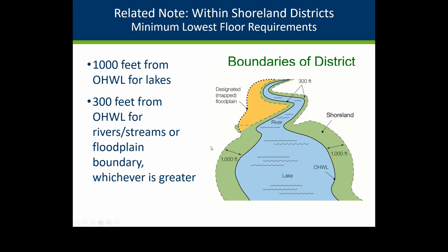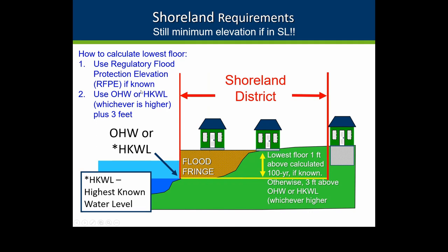Within the shoreland district, if you know the Regulatory Flood Protection Elevation, you use the floodplain rules — one foot above the 100-year with stage increase. If that data isn't available, shoreland rules say use the ordinary high or the highest known water level and add three feet. So there's still protection even outside the official floodplain but within the shoreland district. Someone just outside the shoreland district could technically put in a basement, though we'd recommend against it if they're in a low area. Some communities have higher standards requiring minimum elevations more broadly.